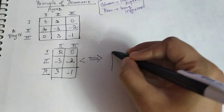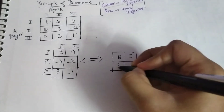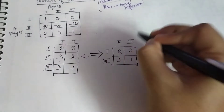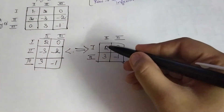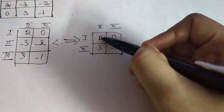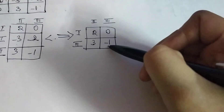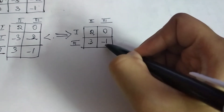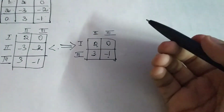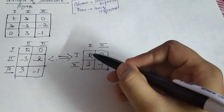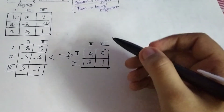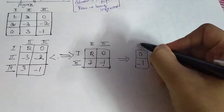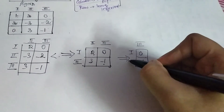After removing that inferior row, you are left with two, zero and three, minus one — that is first strategy and third strategy. Check again: two is less than three but zero is greater than minus one, so you can't eliminate a row. Now check column-wise: two is greater than zero, and three is greater than minus one — both holding true. In column-wise comparison, leave out the superior one. The superior column is the one with two and three, so you leave that out. You are left with zero and minus one, corresponding to the third column and strategies one and three.